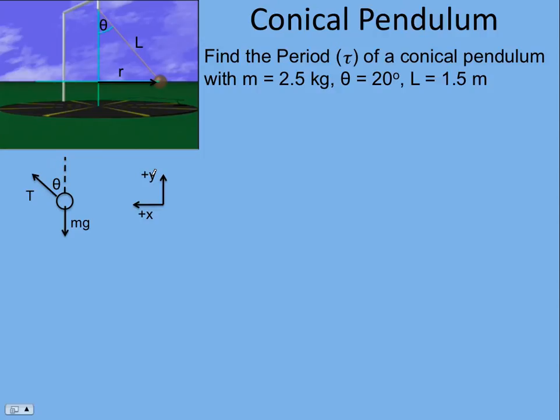So now we need to write Newton's second law. We'll look in the y direction first. There's no acceleration in the y direction. The ball is tracing a horizontal circle. It's not accelerating up or down, and so the sum of the forces in the y direction are zero.